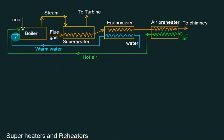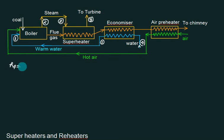Let us define the state points. Point 1 is defined, point 2 is the same, point 3 is defined, and point 4 is the inlet water enthalpy. So what is H4? H4 is simply HF. H1 is more than H4 because heat is transferred from flue gas to water, so H1 is slightly higher — that depends on the effectiveness of the heat exchanger. H1 is the inlet to the boiler.